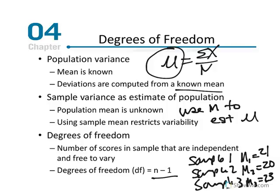Essentially, if you have the calculated mean and a certain number of scores, one value will be restricted and not free to vary due to the parameters of the sample mean and x values. For calculating sample variance, when we see degrees of freedom it's equivalent to sample size minus 1. Dividing by a smaller number inflates the quotient, accounting for the fact that samples don't reflect the entire variability of a population — it's a mathematical correction.